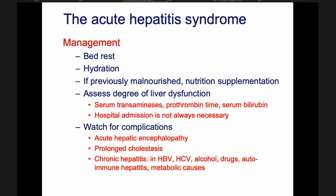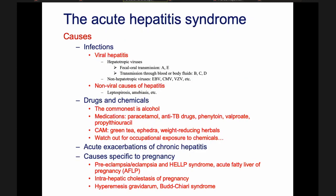Among the causes of acute hepatitis, sometimes we give specific treatments: for hepatitis B, there is a medication called lamivudine. For cytomegalovirus we give valganciclovir, and for varicella-zoster virus we give acyclovir. Leptospirosis is treated with antibiotics, and amoebiasis is treated with metronidazole. So there are not many specific treatments, but they exist for certain causes.